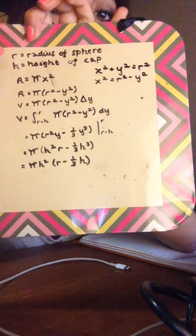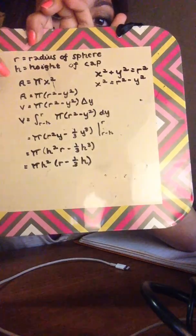Okay, so define your variables: r is the radius of the sphere and h is the height of the cap. So then the area of each cross section is going to be...